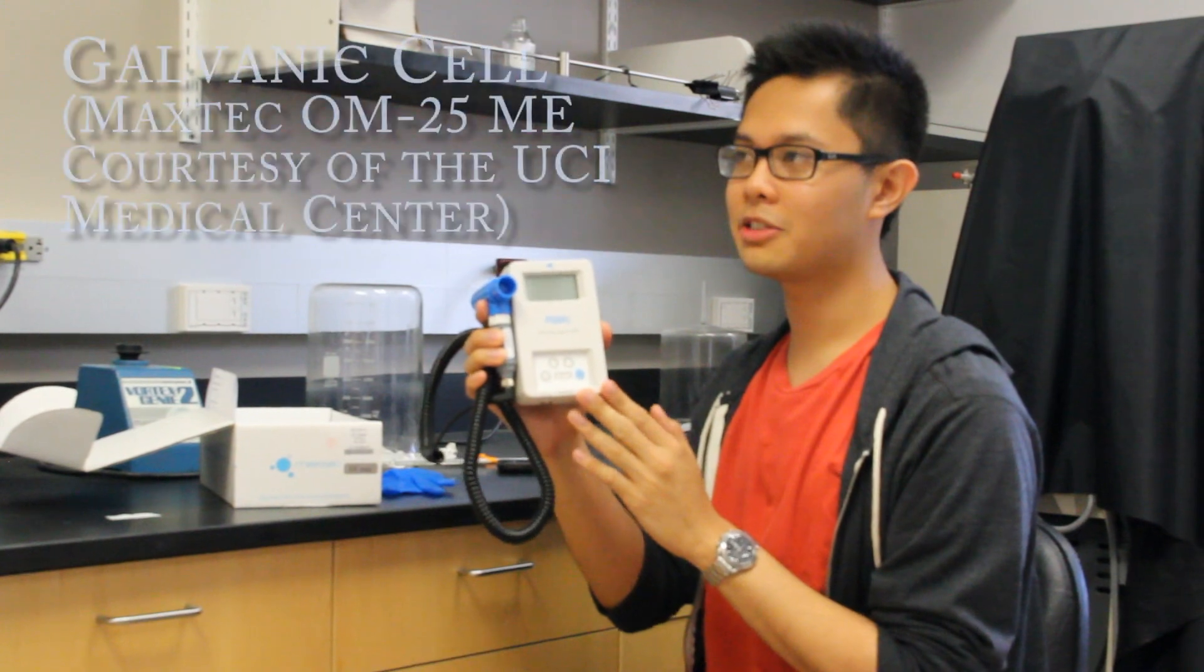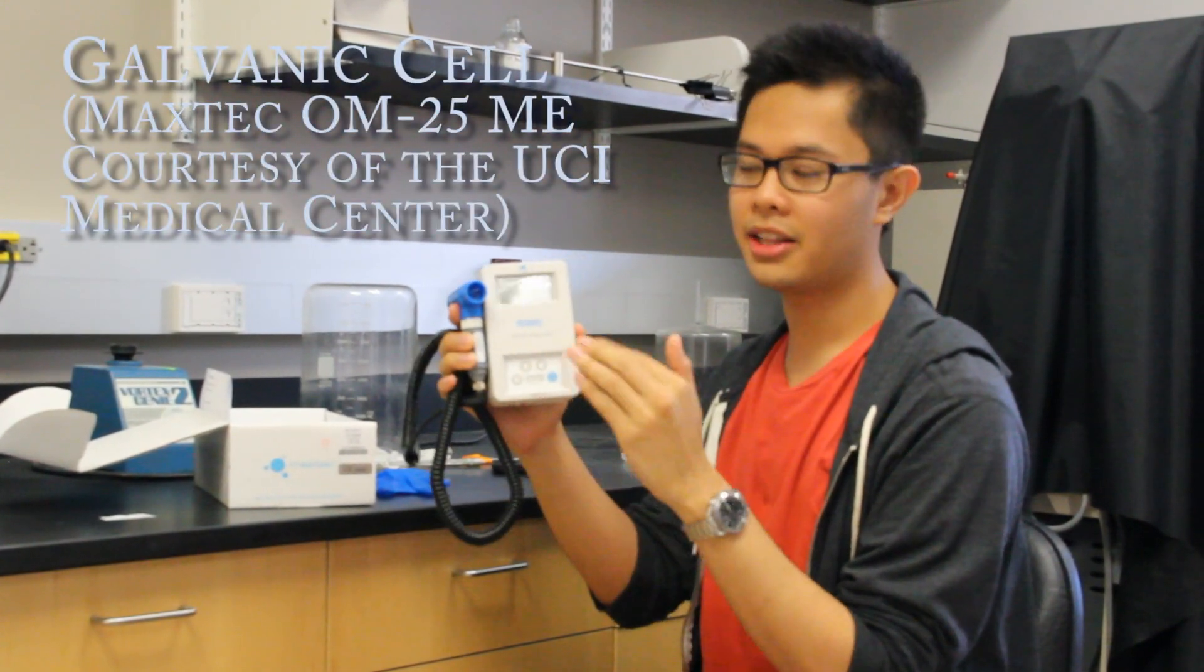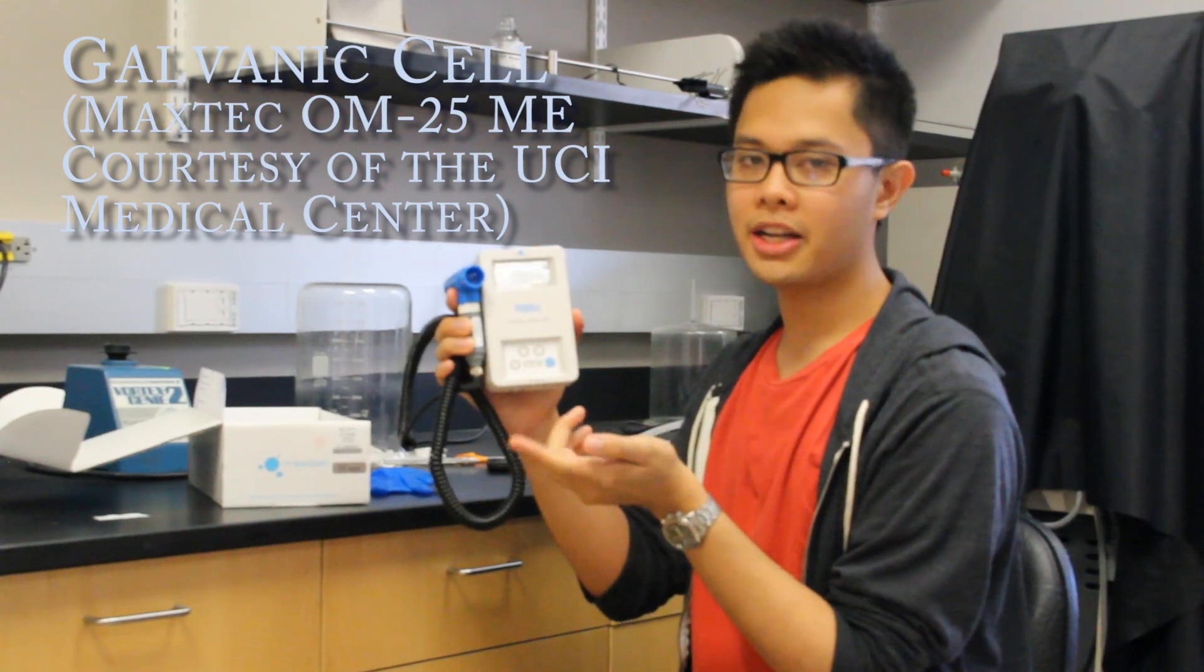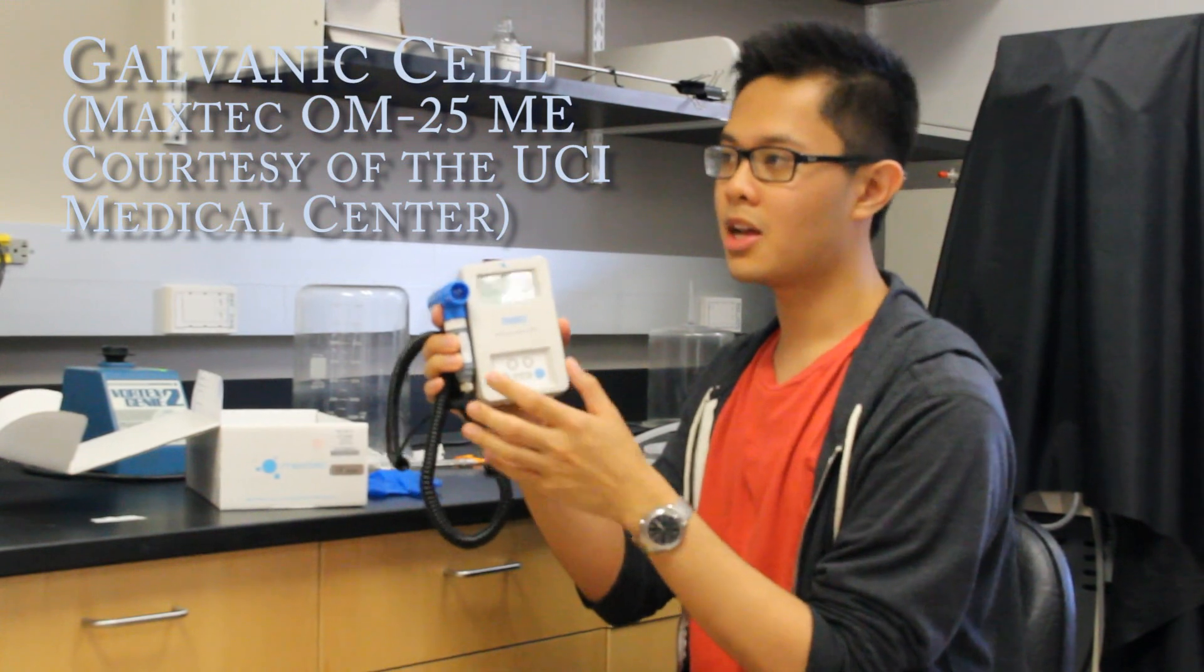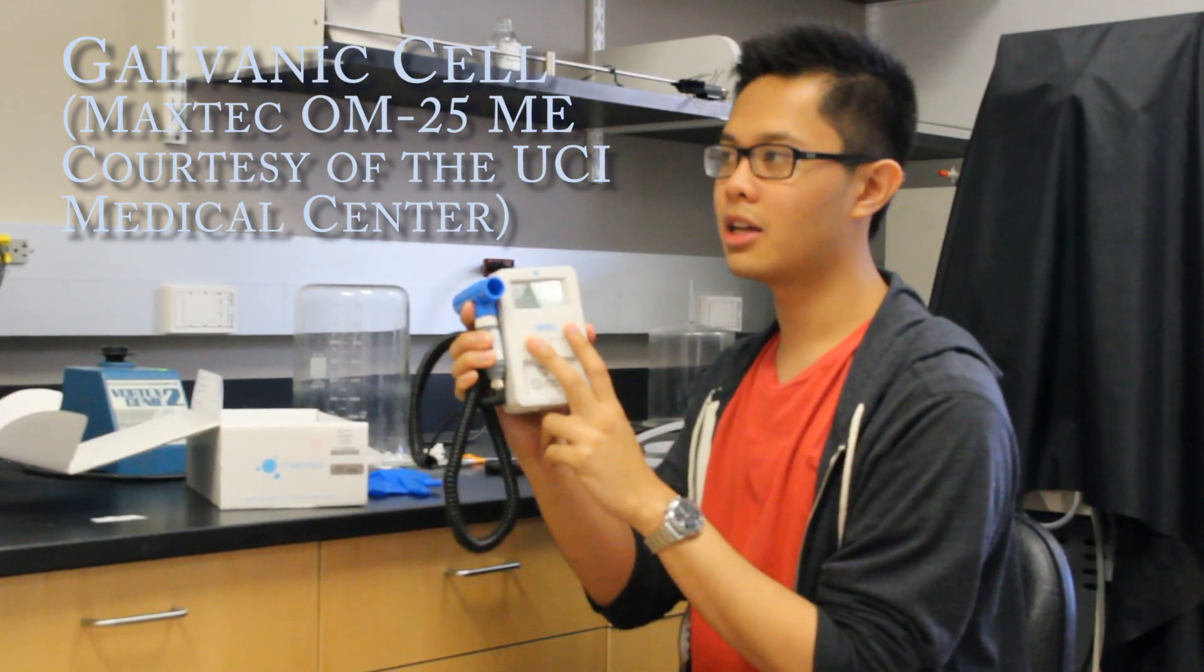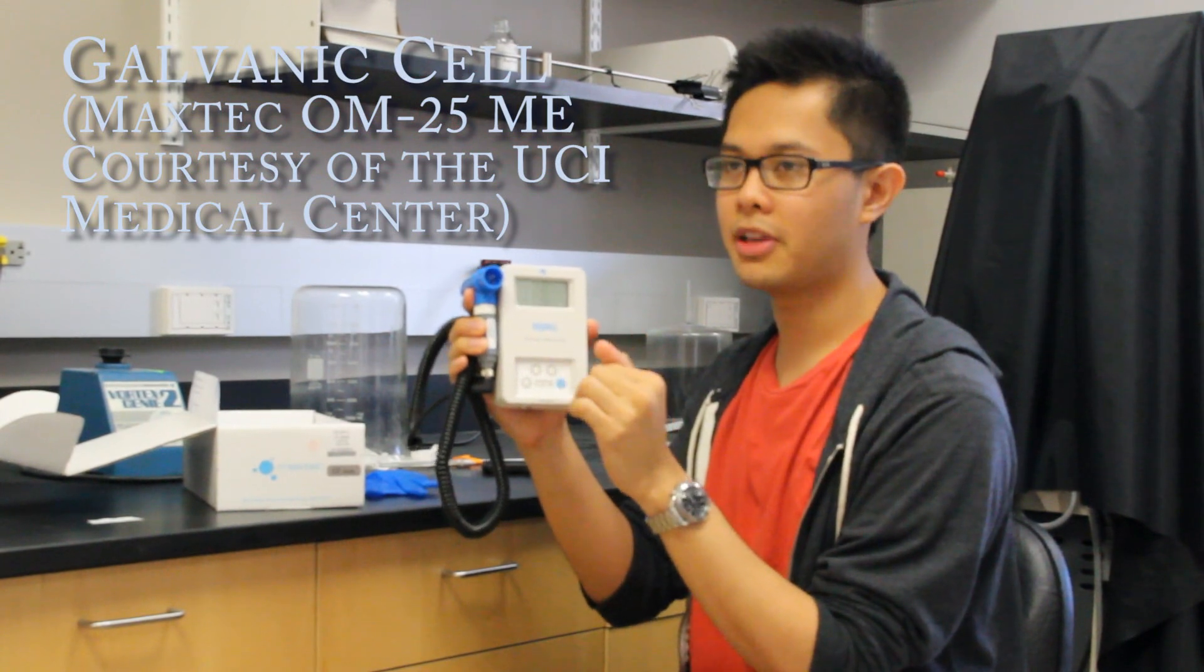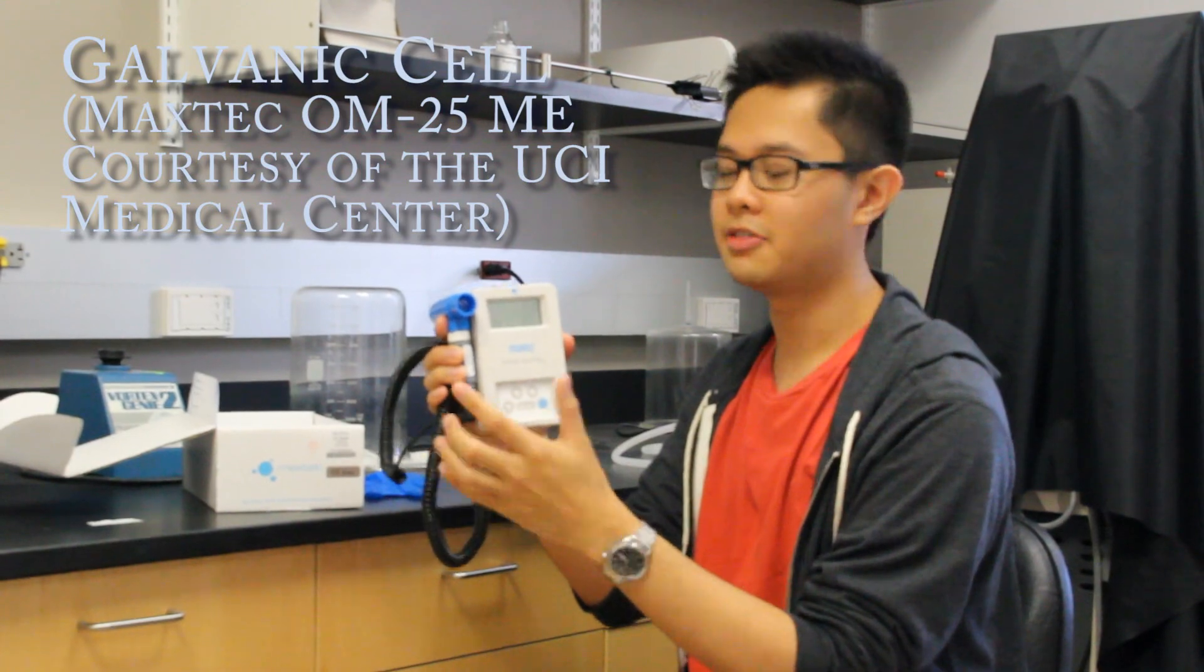Galvanic oxygen sensors essentially work by a chemical reaction within the galvanic fuel cell, the cathode and the anode, and that's because of the exposure of the potassium hydroxide to the air. The current created is dependent on the partial pressure oxygen produced, and we can measure that oxygen based on the current. This particular model is $400, and it has a response time of 15 seconds, and it's accurate within 90% of the actual oxygen in its environment.